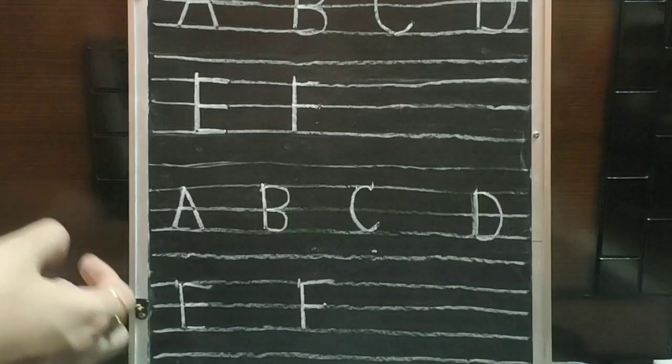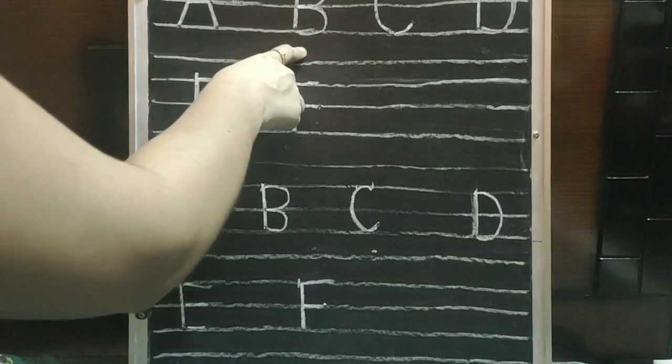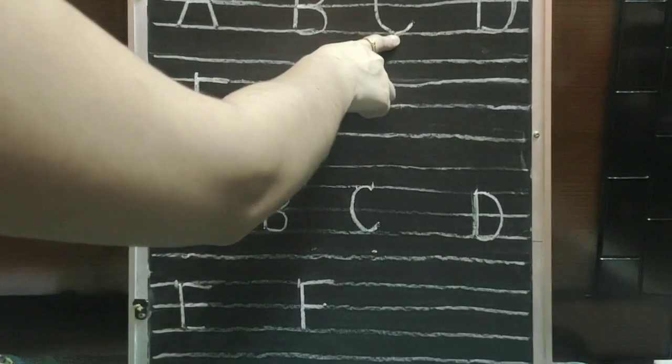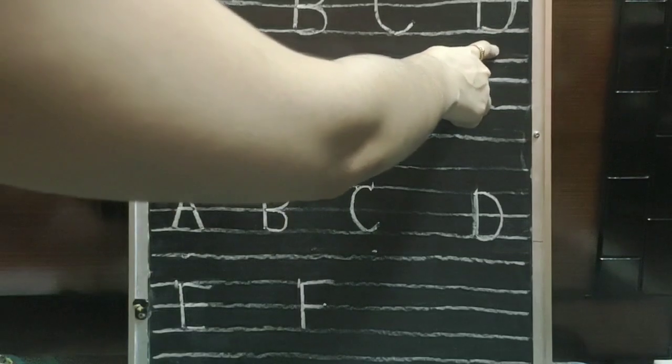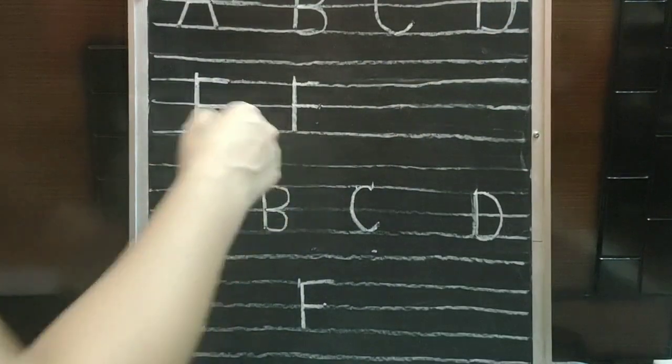Now revise with me. A for Apple, B for Ball, C for Cat, D for Dog, E for Elephant, F for Fish.